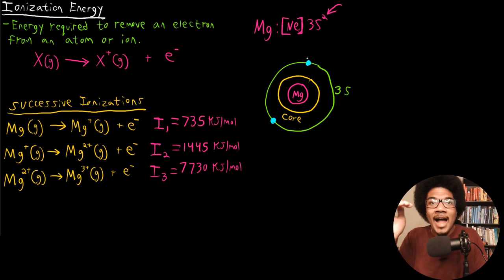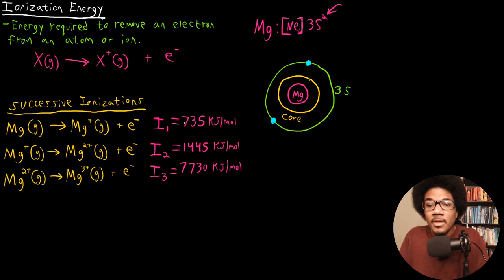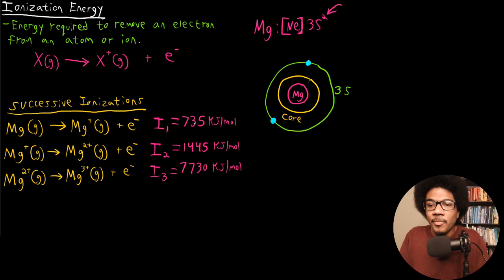That first electron stripped off is coming from the highest energy orbital in magnesium. It's going to be the easiest electron to liberate since it's far away from the nucleus — it's going to have the highest energy. So it's easiest to liberate, and that ionization takes 735 kilojoules per mole. Anytime you're looking at an ionization, that electron is coming from the valence shell, from those highest energy orbitals.